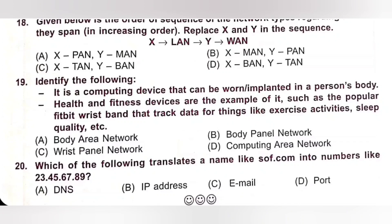Nineteenth. Identify the following. It is a computing device that can be worn or implanted in a person's body. Health and fitness devices are examples, such as the popular Fitbit wristband that tracks data for things like exercise activities, sleep quality, etc. Options: A. Body Area Network, B. Body Panel Network, C. Wrist Panel Network, D. Computing Area Network. The answer is Body Area Network. Option A is the correct answer.